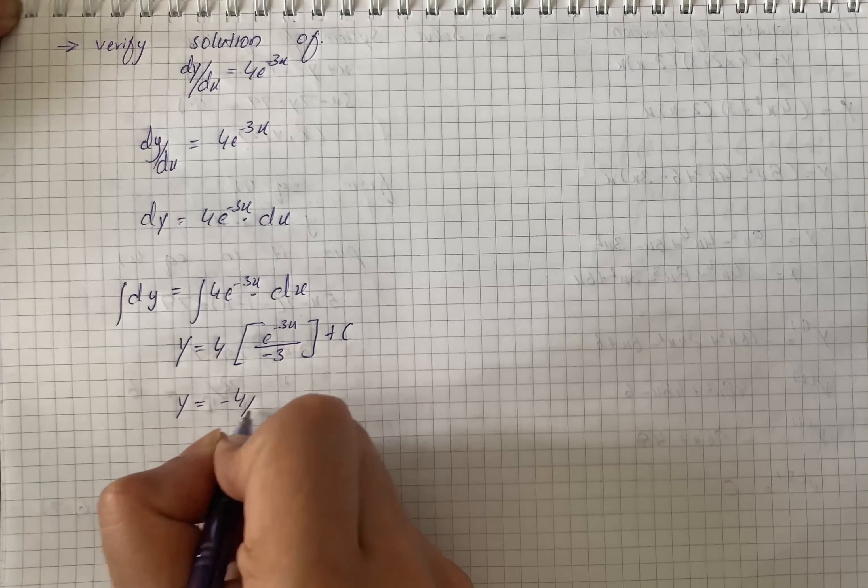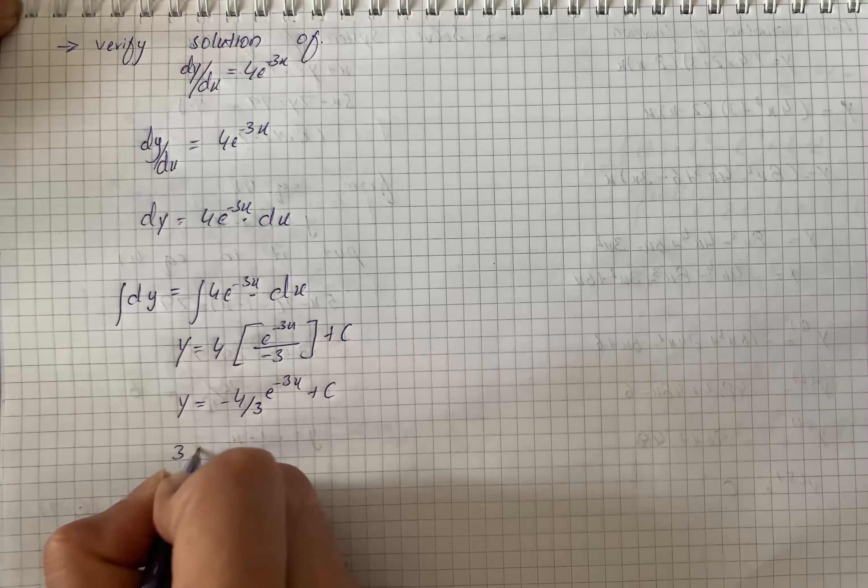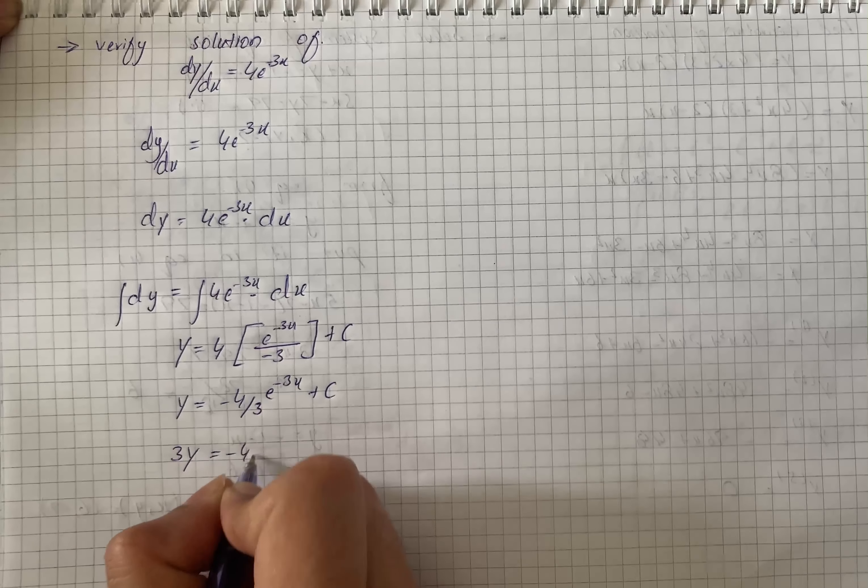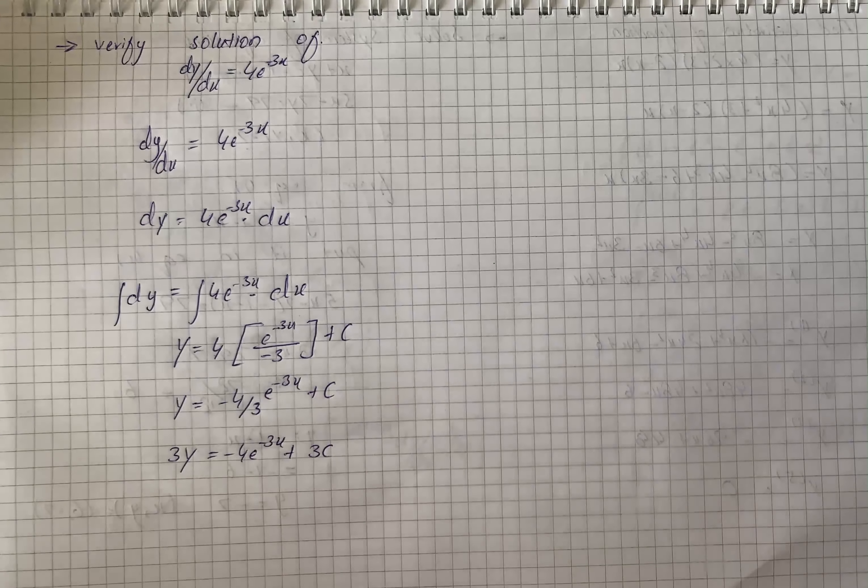For the simplification, we have minus 4 by 3 e raised to the power minus 3x plus C. And then we have 3y equals minus 4e raised to the power minus 3x plus 3C as our solution.